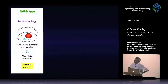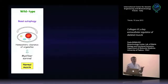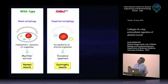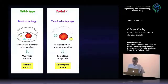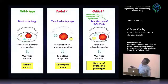The take-home message: in wild-type muscle you need a basal level of autophagy to maintain homeostatic clearance of organelles. Muscle fibers are subjected to a lot of stress during contraction so autophagy needs to work properly. In collagen 6 myopathies, you have impaired autophagy with accumulation of altered organelles, leading to excessive apoptosis and the dystrophic phenotype. But if you are able to reactivate autophagy by different means — prolonged starvation, low-protein diet, drugs, natural compounds — you can remove altered organelles, restore myofiber survival, and rescue the dystrophic phenotype.